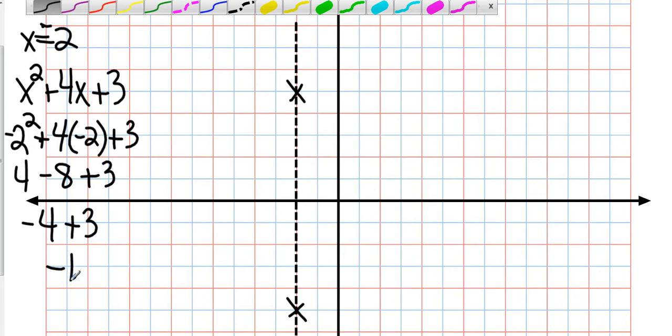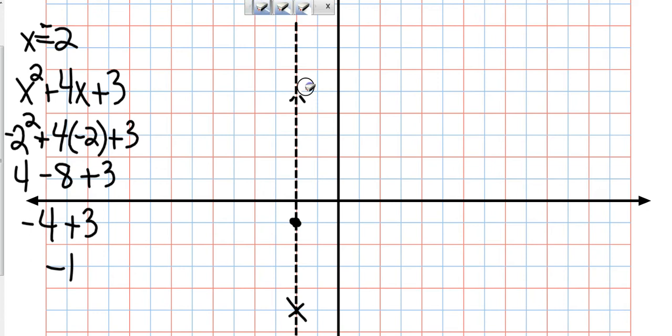So where on that line is negative 1? Well, we're one space down right here. So that's the turning point. That's called the vertex. The vertex is the turning point.